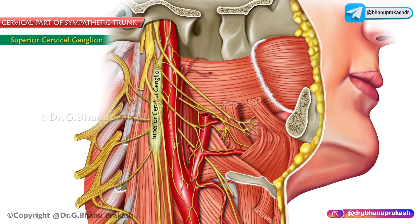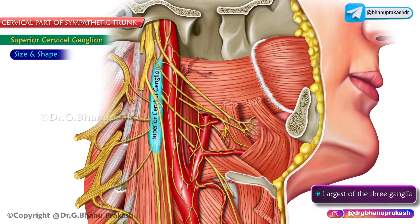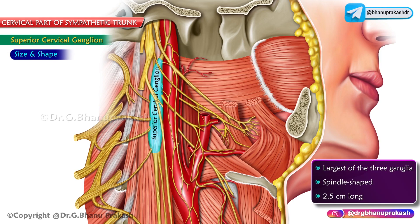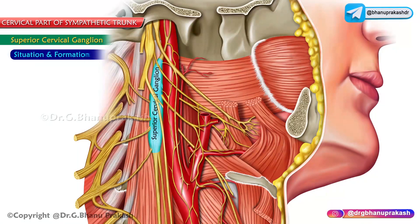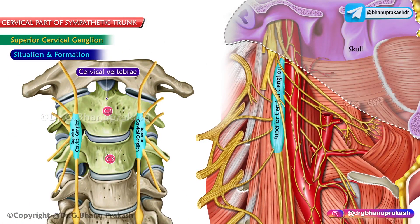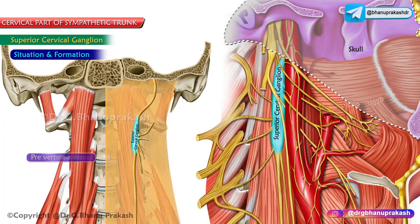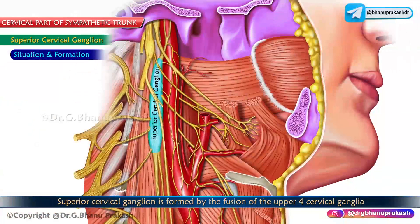The superior cervical ganglion is the largest of all three ganglia. It is spindle-shaped and about 2.5 centimeters long. It lies just below the skull, opposite the second and third cervical vertebrae, behind the carotid sheath and in front of the pre-vertebral fascia.